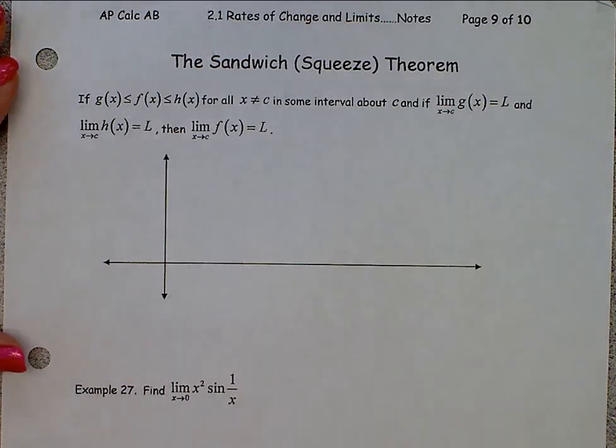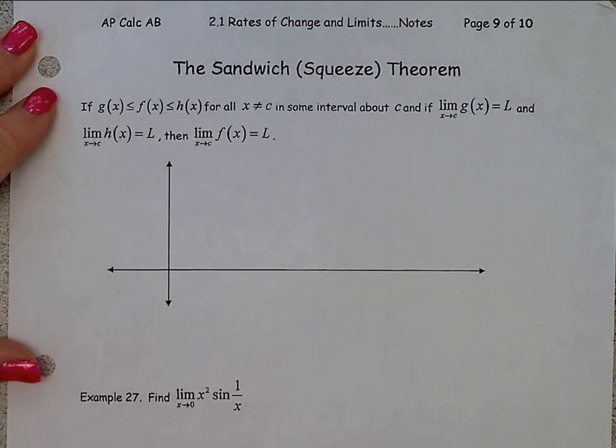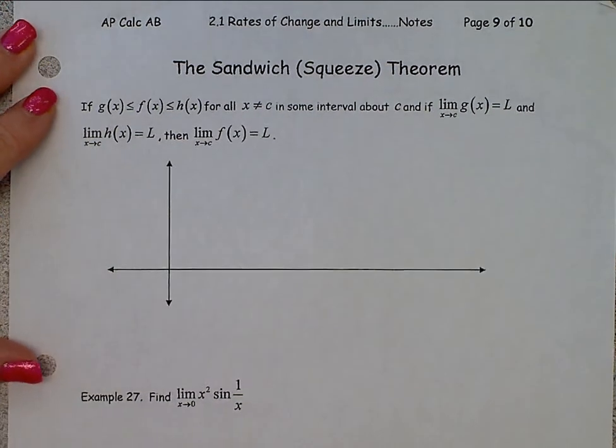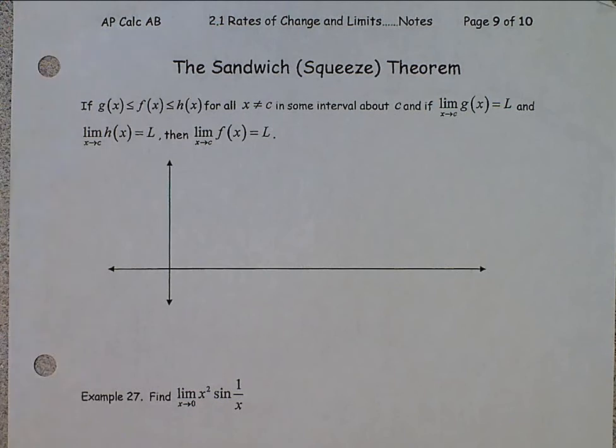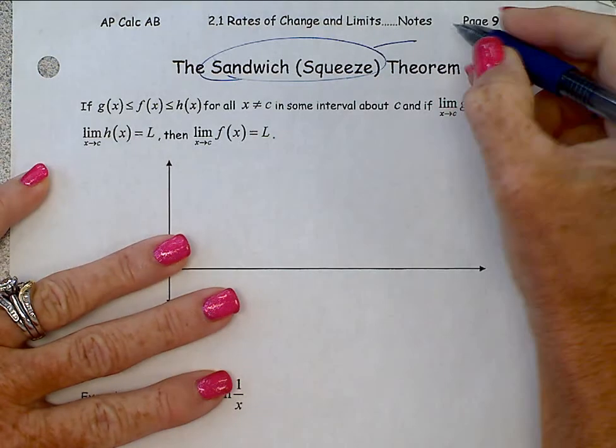This is AB Calculus, Section 2.1, Rates of Change, page 9. We are going to talk about the sandwich or the squeeze theorem. The sandwich or the squeeze theorem finds the limit of ugly functions.